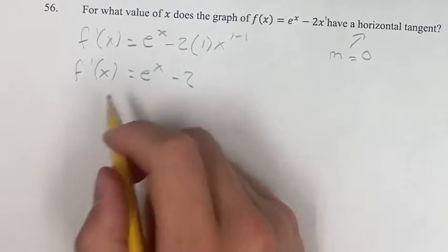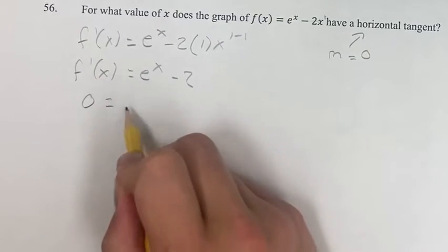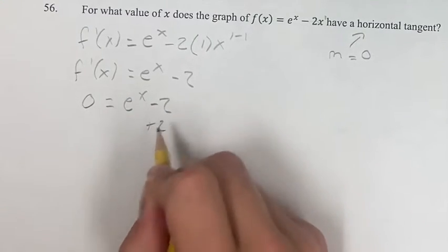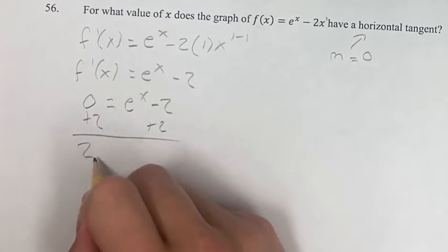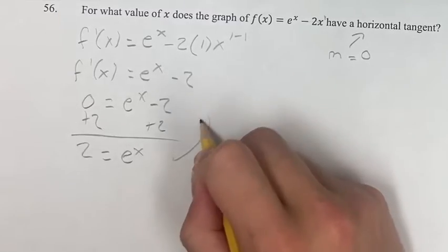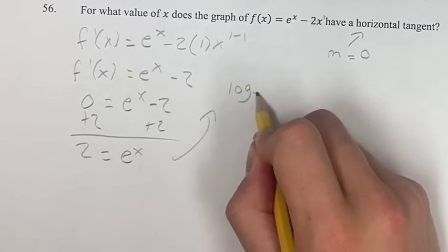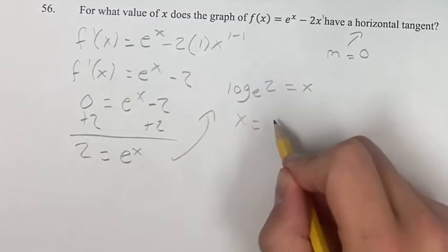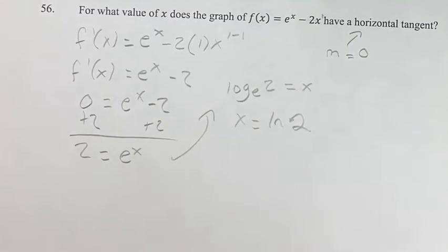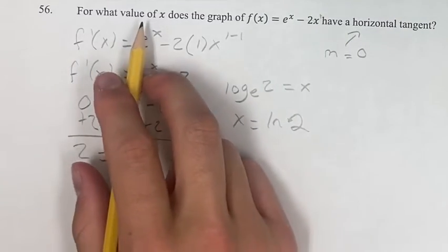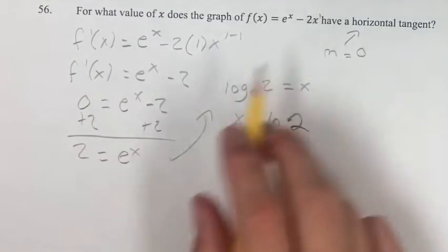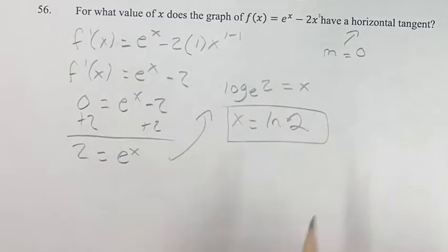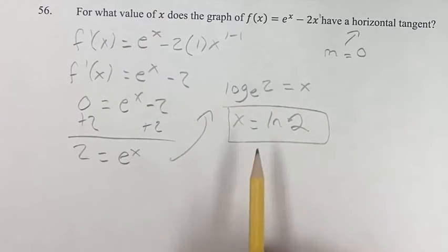We're asked when this derivative is equal to 0. Setting it equal to 0 and solving for x: 2 is equal to e to the x. That means log base e of 2 is equal to x, so x is equal to ln of 2. So the function has a horizontal tangent line when x is equal to ln of 2.